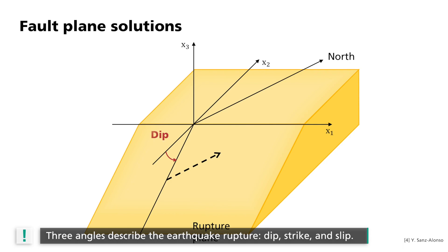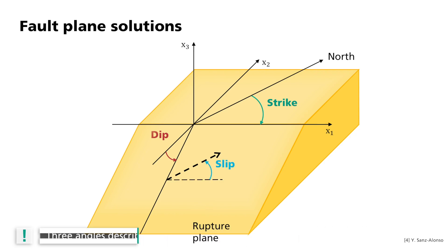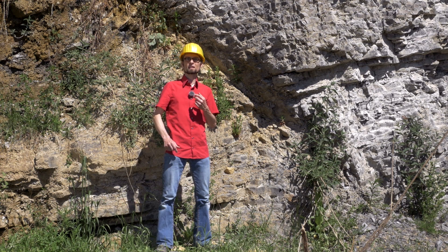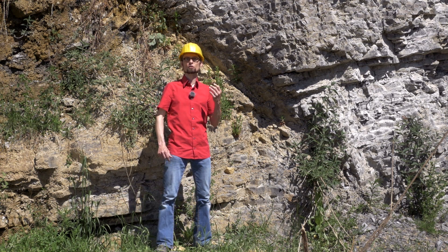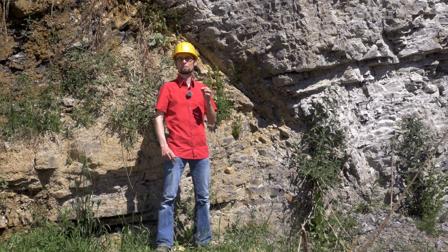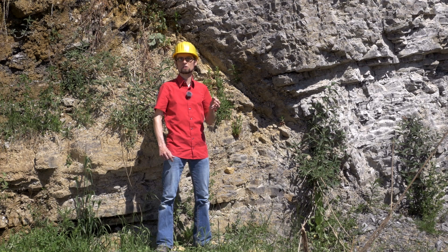Secondly, the strike. This is the orientation of the fault line between the rupture plane and the earth's surface — that is, orthogonally to the direction of inclination of the rupture plane. The third parameter indicates the slip angle of the displacement of the rock sections on the plane. I will demonstrate here at the fault zone itself how these three parameters are determined.